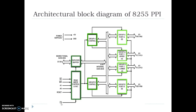The most important among them is the chip select. The chip select line acts as a virtual switch which is used to select this IC. The read signal is used whenever data from the data bus buffer is sent to the microprocessor, and the write signal is used whenever data from the microprocessor is stored into the data bus buffer of the IC. The reset circuit is used to reset the functioning of the whole IC, and A1 and A0 address lines are used to select one of the three ports, that is Port A, B, or C.